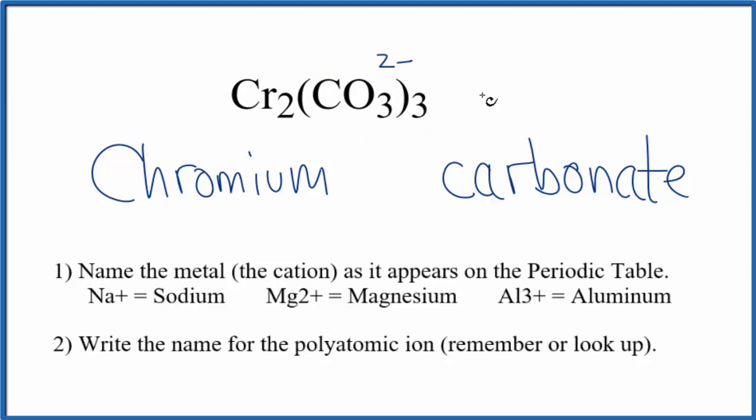Since we have three of them, three times 2- is 6-. For the chromium to be 6+ and everything to add up to zero, giving us a net charge of zero, two times 3+ will give us 6+.